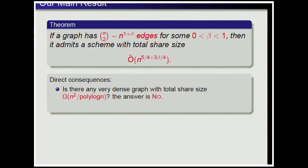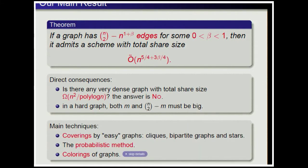Therefore, in a hard graph, both the number of edges and N-choose-2 minus the number of edges must be large. To obtain this result, we use coverings of graphs by easy graphs — graphs that are easy to realize — such as cliques, bipartite graphs, and stars. We also use the probabilistic method and colorings of graphs.